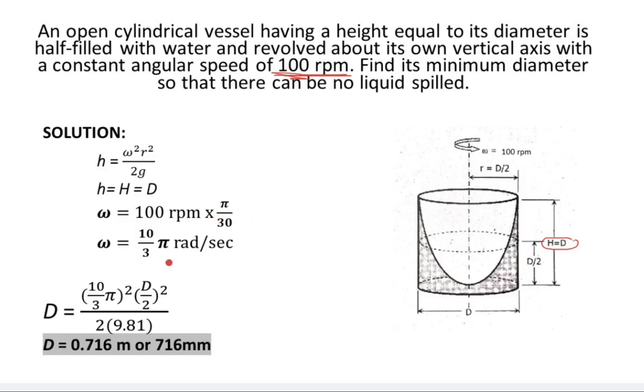So this is our omega. Now let's solve for its minimum diameter using the given formula from the beginning. Let's substitute into the formula.